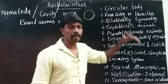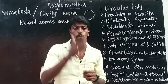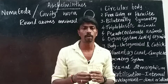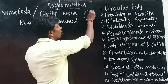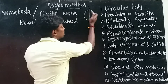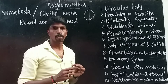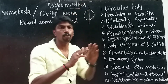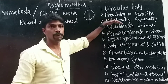The next point: these animals are bilaterally symmetrical. Bilaterally symmetrical means only one plane passing through the central axis of the animal's body can cut the organism into two equal halves. That type is known as bilaterally symmetrical animals.